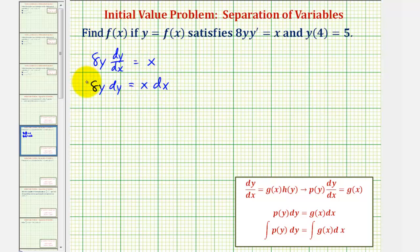And now we'll integrate both sides of the equation. The integral of 8y with respect to y would be 8 times y squared divided by 2. We would have plus a constant of integration, but we're going to save that for the right side and combine the two constants. So we'll have equals the integral of x with respect to x would be x squared divided by 2.